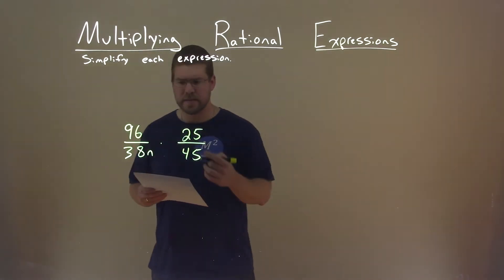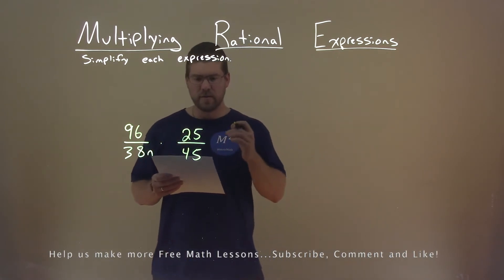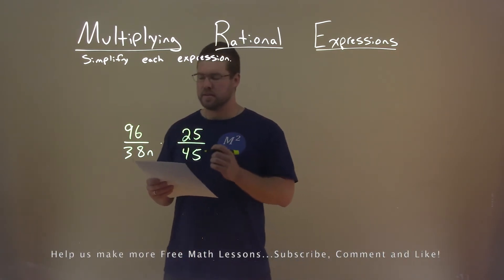We're given this problem right here. 96 divided by 38n times 25 divided by 45. And we want to simplify this expression.